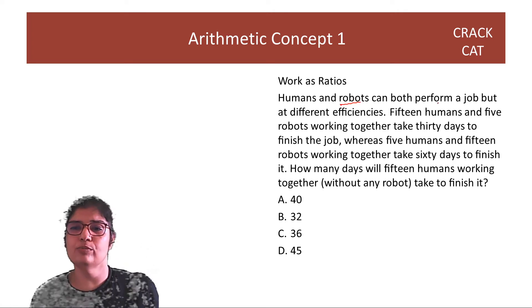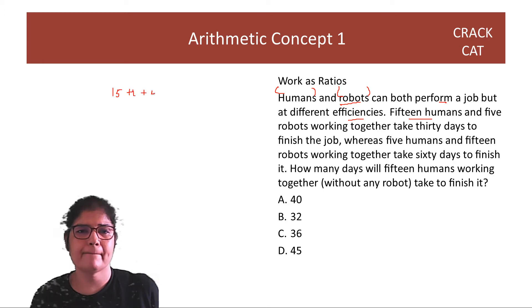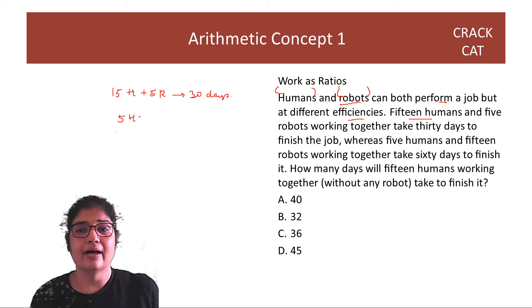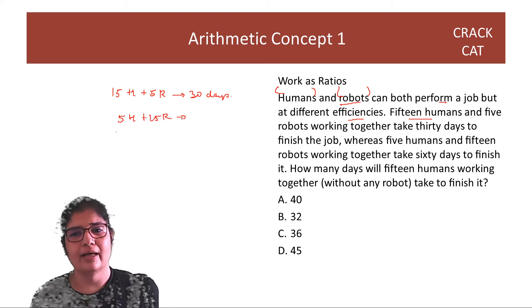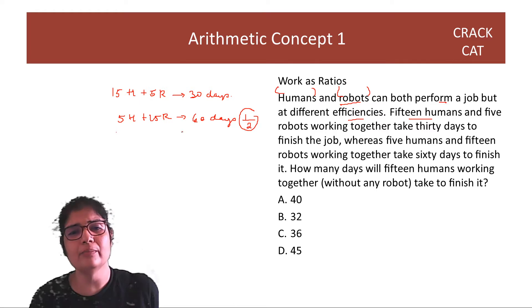So here is a CAT 2018 question. Let's solve it. Humans and robots can both perform a job but at different efficiencies. So ye hai dekho. All humans are the same efficiency. All robots are the same efficiency. But humans and robots within themselves have different efficiencies. So you have 15 humans and 5 robots. And they take 30 days to do something. And then you have 5 humans and 15 robots. And they take 60 days to do something. Why are they taking 60 days? Because their efficiency is how? Because they are slow. So we convert that in 30 days. Let's double the people.